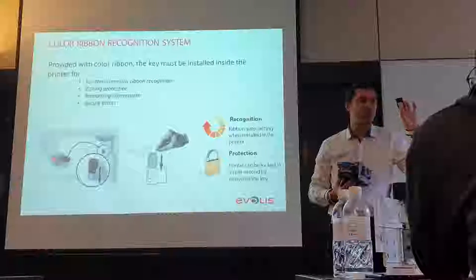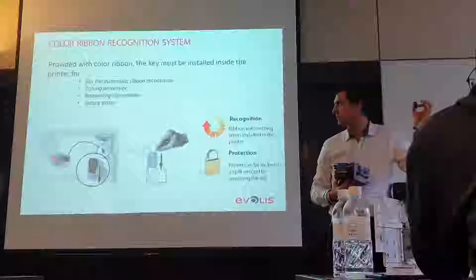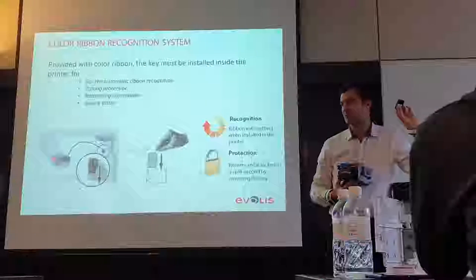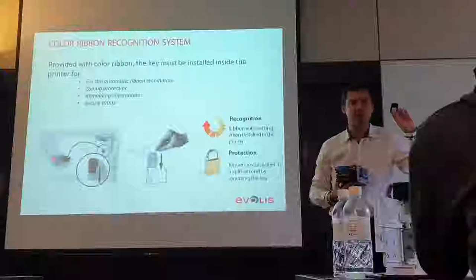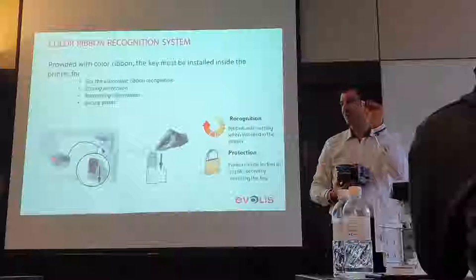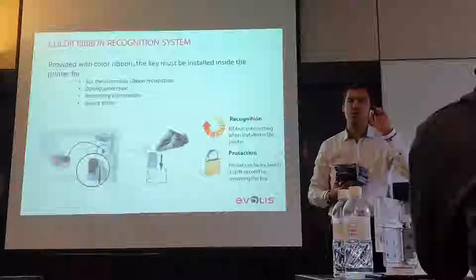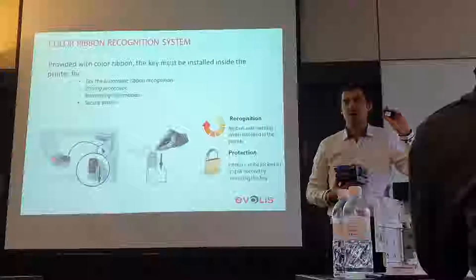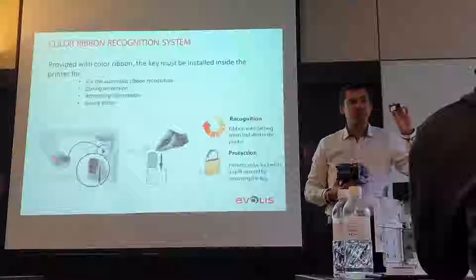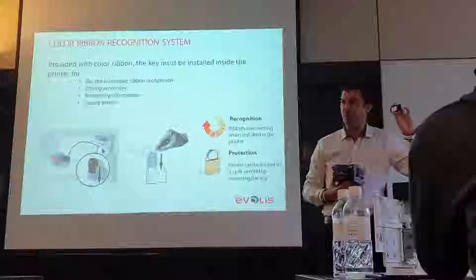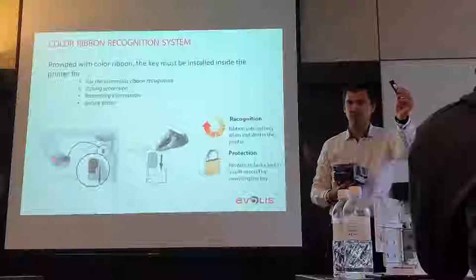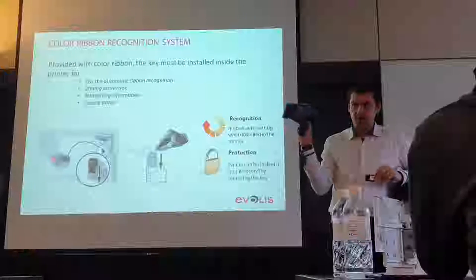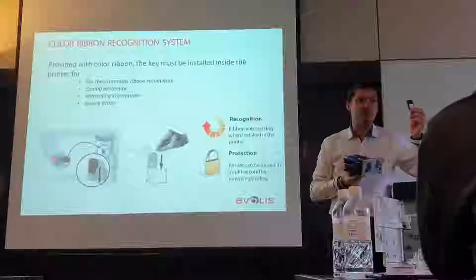The key tells the system exactly which ribbon to use, and contains more information like the classic Evolis ribbon information — first that we are using an Evolis ribbon, second that we have zoning. The rule to remember: the key follows the ribbon and the ribbon follows the key, always.